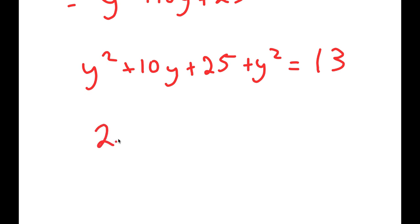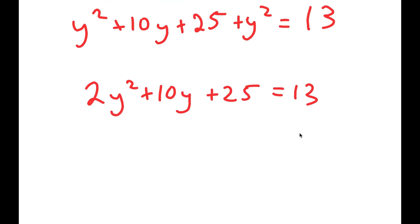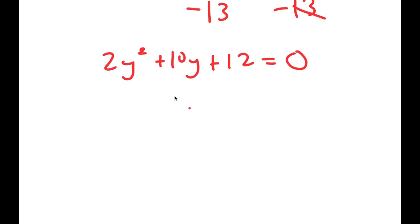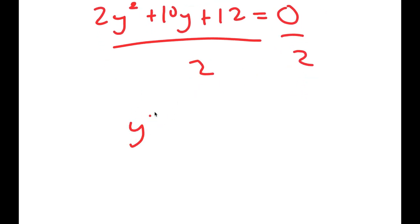Adding like terms I get 2y squared plus 10y plus 25 is equal to 13. Subtracting 13 from both sides gives 2y squared plus 10y plus 12 equals 0. Dividing both sides by 2, I get y squared plus 5y plus 6 is equal to 0.